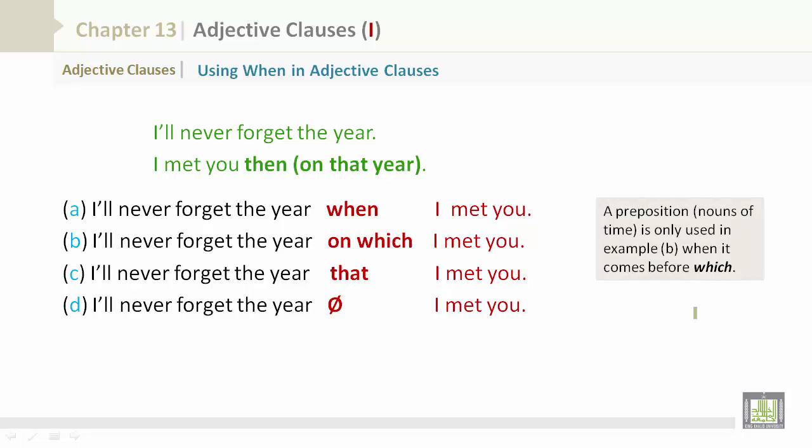A preposition, nouns of time, is only used in example B when it comes before which. Let's take a look at example B.